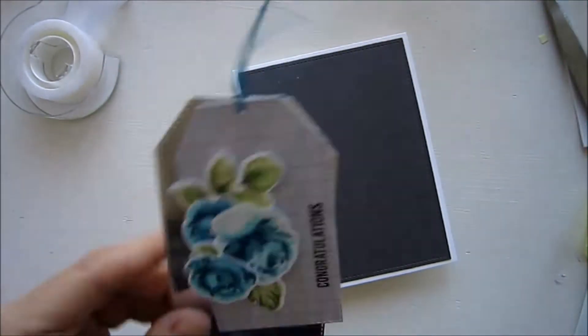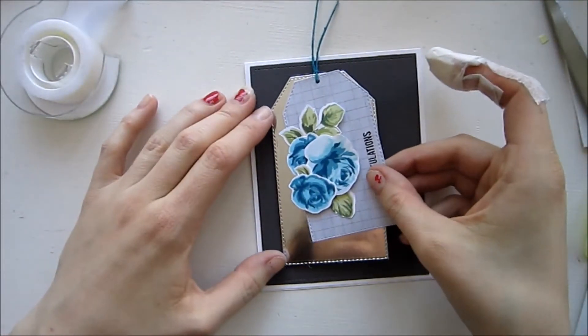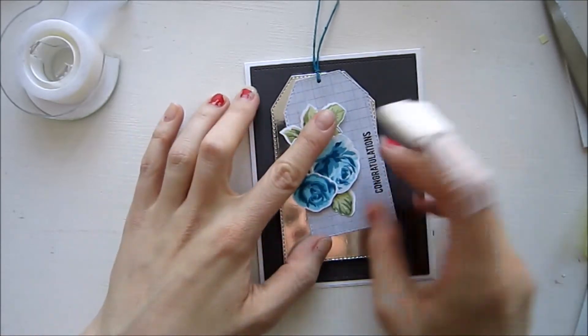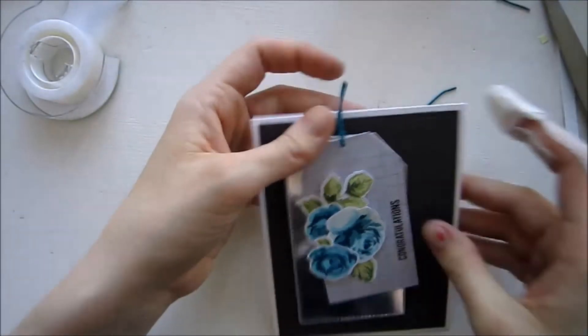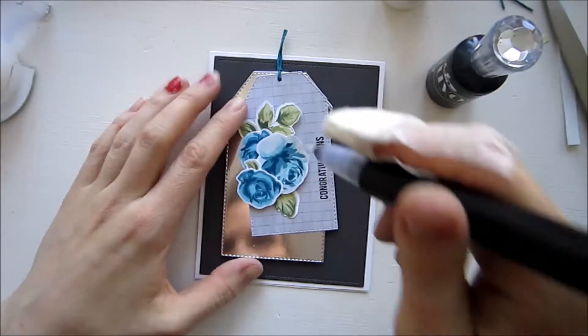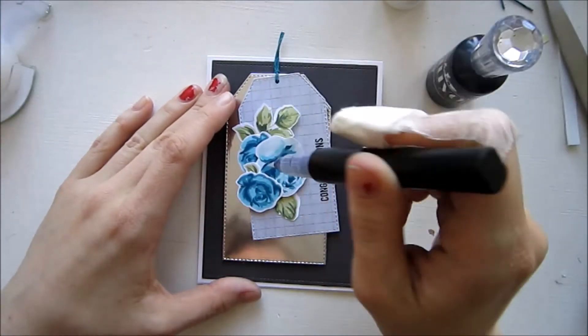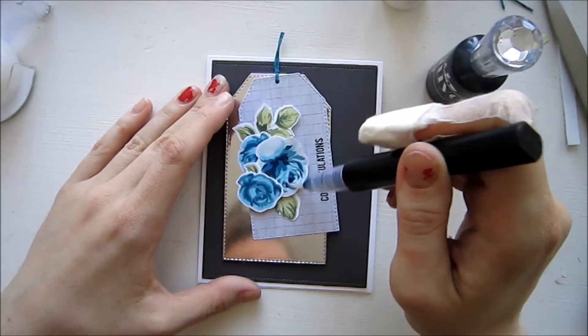I'm taking my ATG gun and just covering the back side with some adhesive and then I'm gluing this tag down on top of our card base.